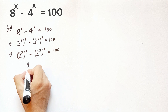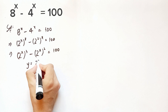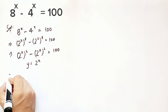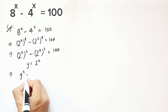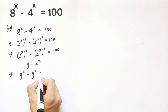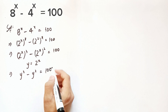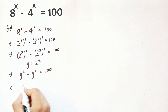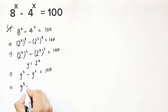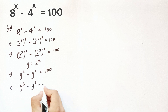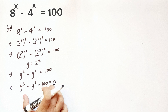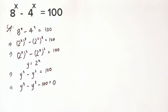Let's substitute y in place of 2 to the x so that we have this equation in a simple form. Replacing y, we get y cubed minus y squared equals 200. Moving 200 to the left hand side, we get y cubed minus y squared minus 100 equals 0.